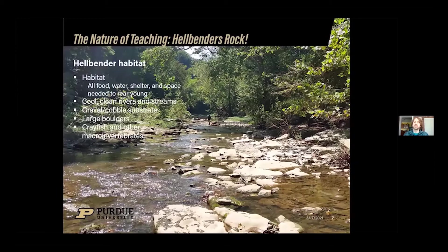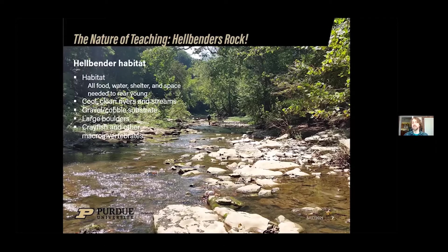Hellbenders require a specific type of habitat. Habitat is basically the food, water, shelter, and space that a species needs to rear its young. Hellbenders require cool, clean rivers and streams — that is the connection to water quality. They prefer a gravel cobble substrate, where their larvae spend most of their time, and they also need large boulders, which is where juveniles and adults spend most of their time and where adults breed. Finally, they need crayfish for food — that's their primary food source — but they will also eat other fish and small macroinvertebrates on the bottom of the river.